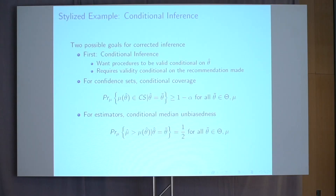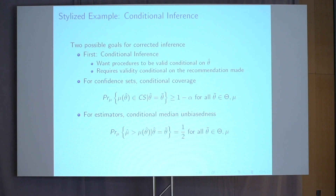Having motivated this problem, let me now tell you about our proposed solution. Not surprisingly, having shown you that there's a bias here, what we're going to try to do is develop corrected inference procedures. To do that, we need to start by defining what we mean for inference to be correct in this context. We're going to think about two different notions of corrected inference.